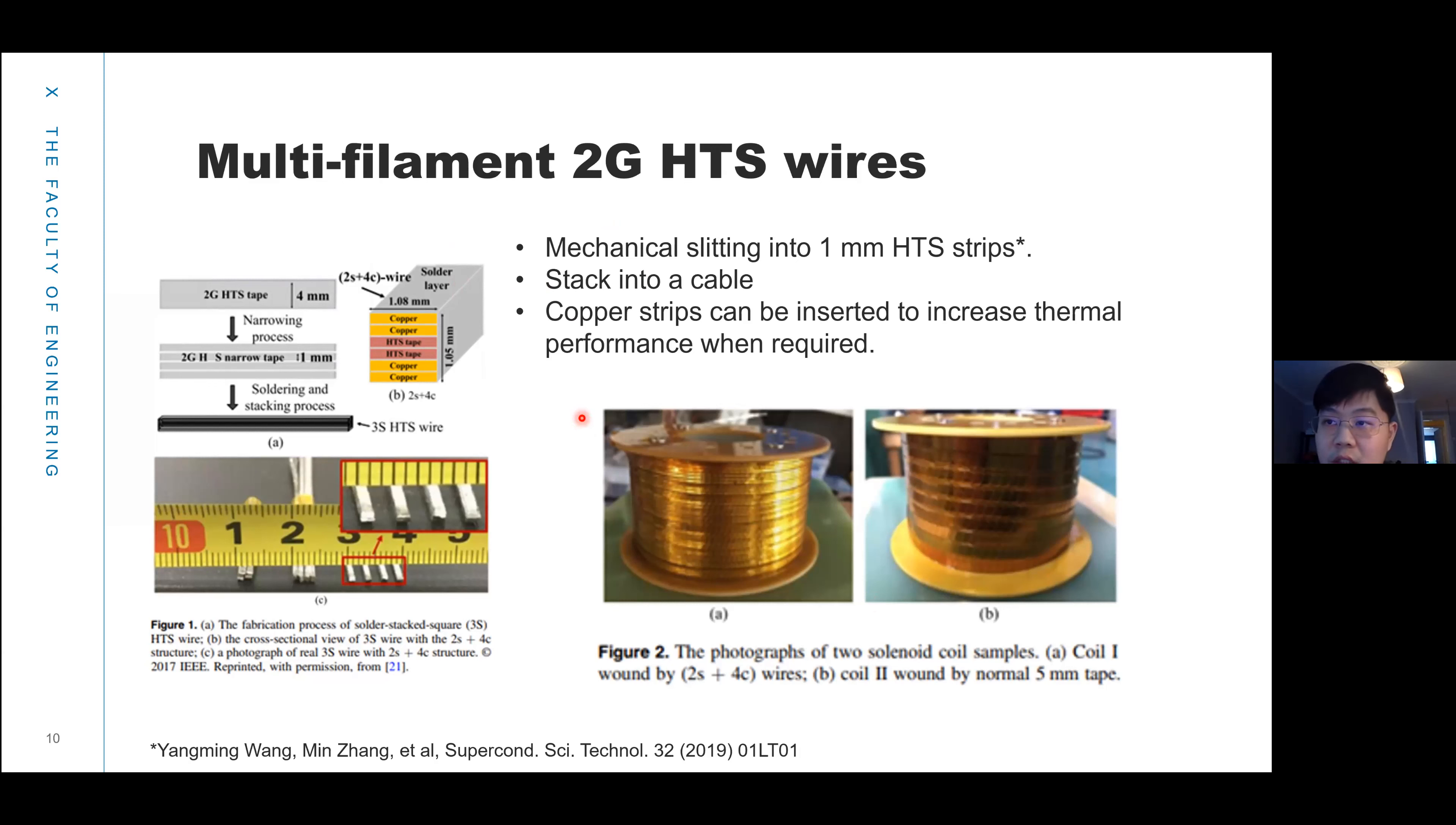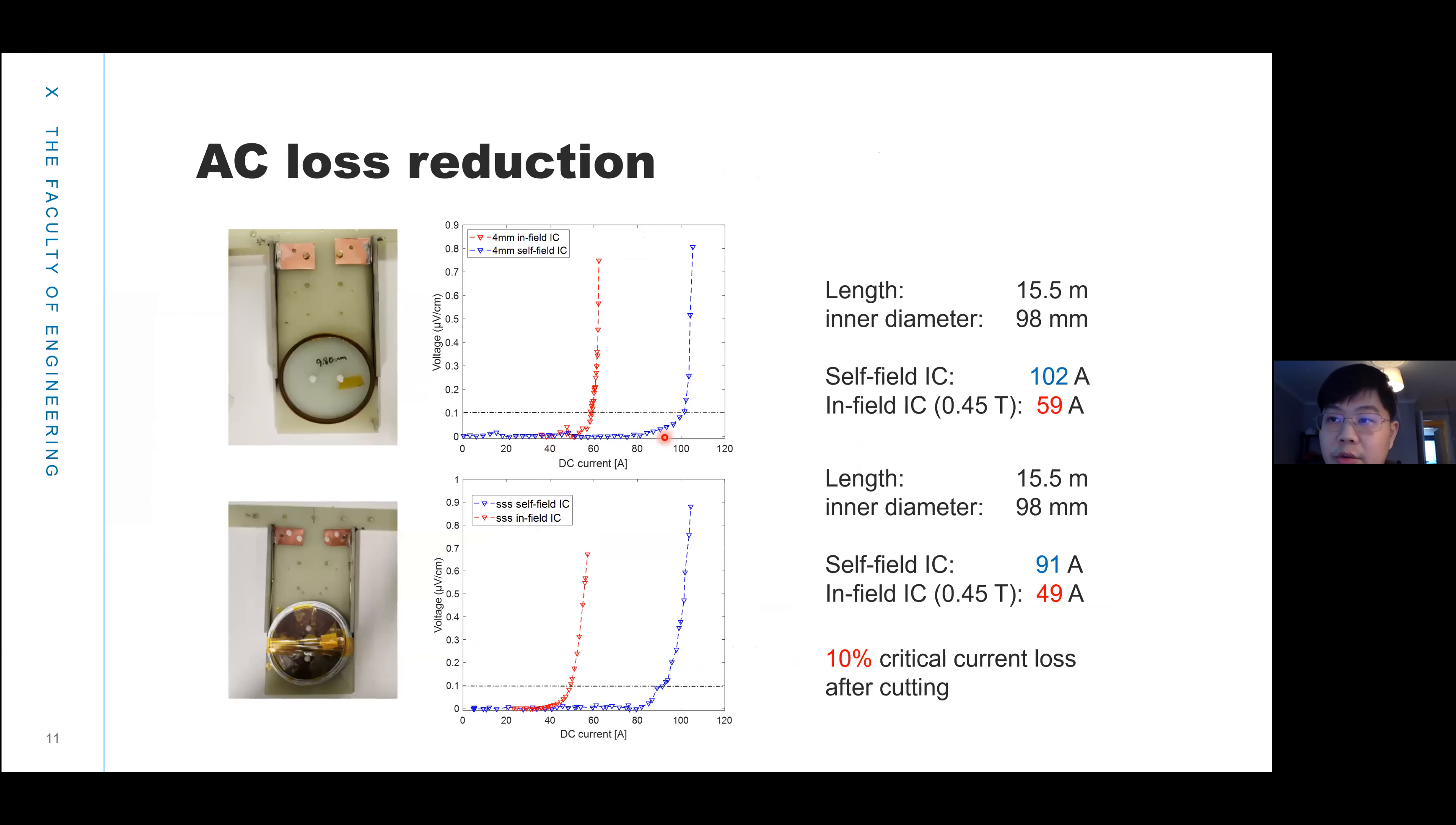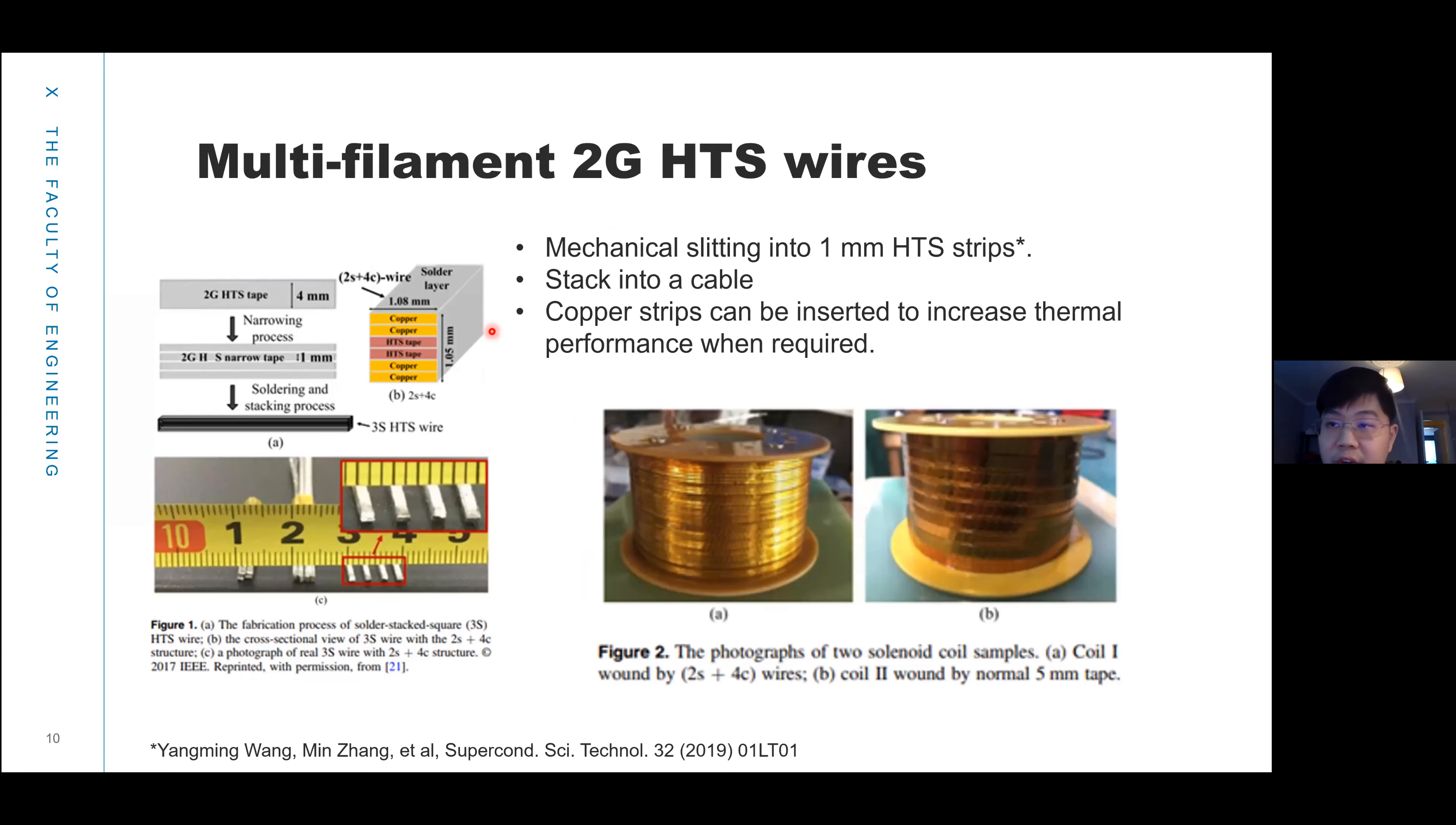We have cut a 4 millimeter tape to 1 millimeter strips and stacked them together and then soldered them. Because we're narrowing the width of the tape, in theory, the AC loss will reduce. We did the experiment to prove the new structure of multi-filament wire can reduce the AC loss.